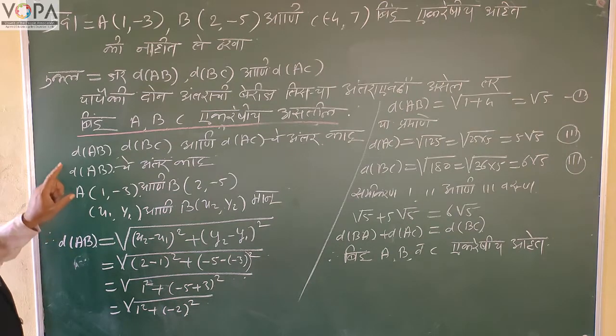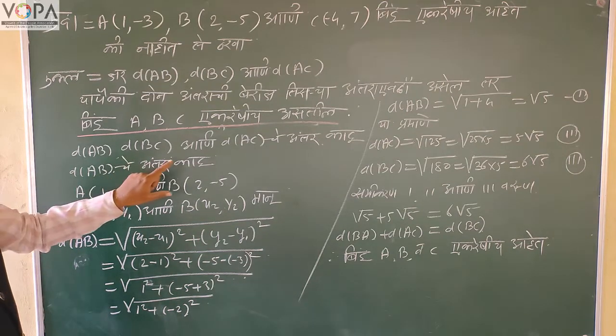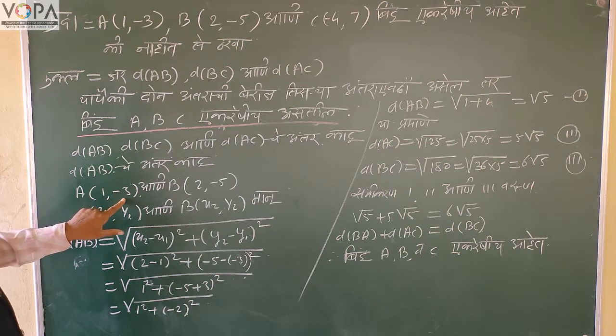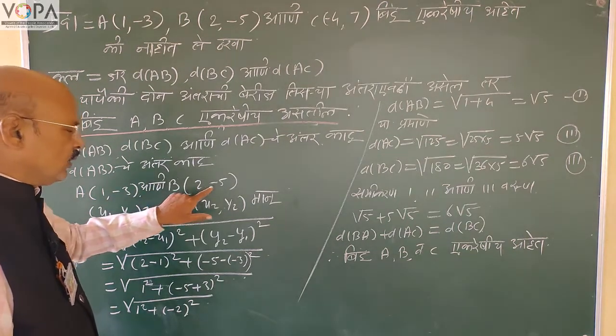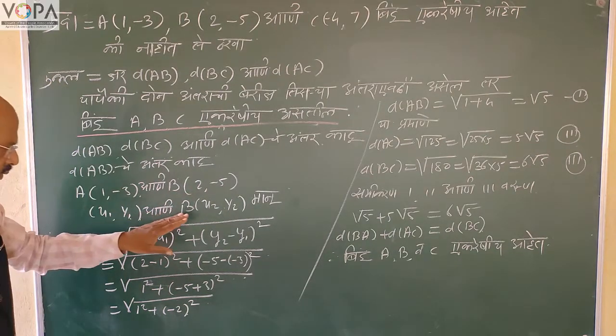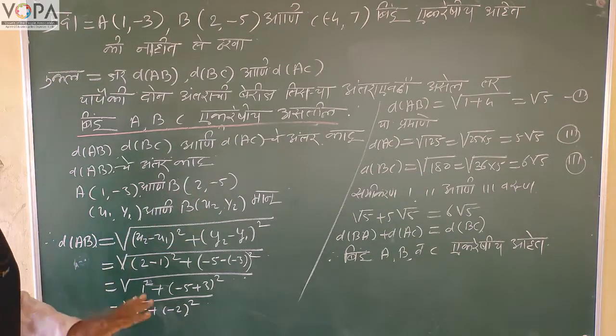Now, let's start with A and B. A and B are equal to 1,3. B and B are equal to 2,5. Then we call X1, Y1 and X2, Y2.